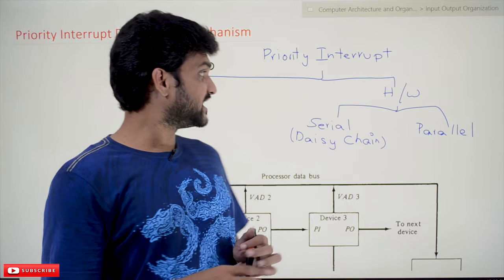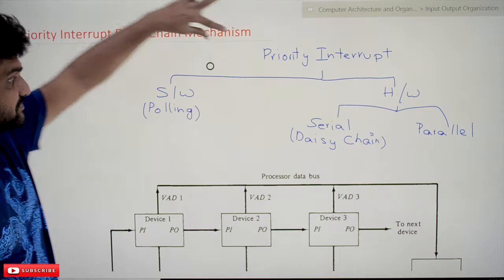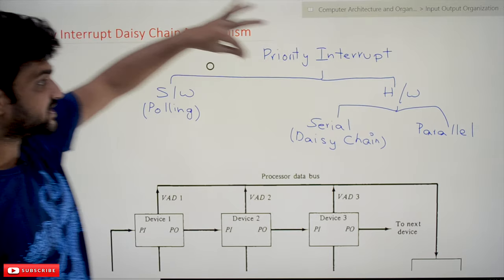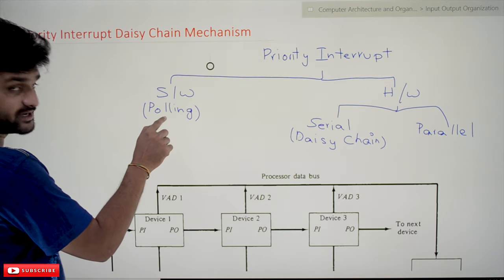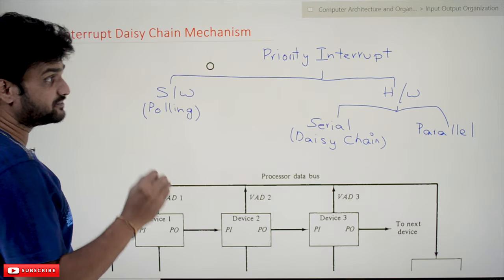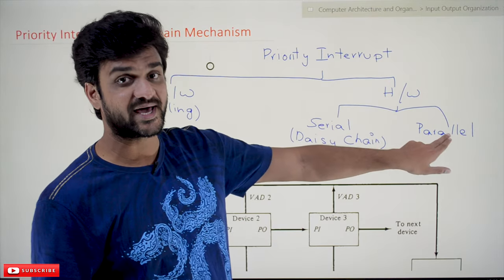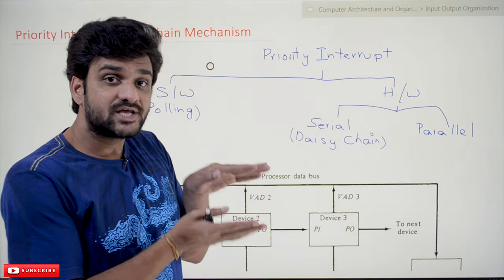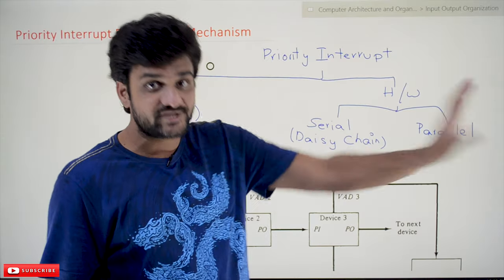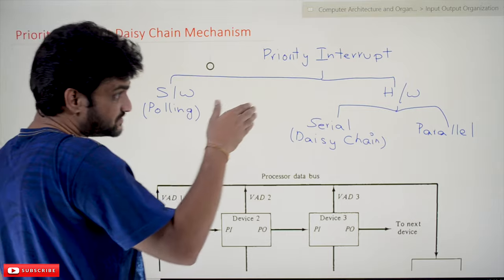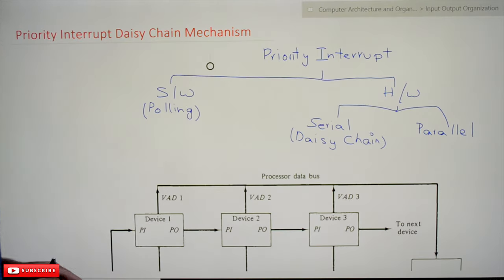In the previous class we discussed priority interrupts. Services for priority interrupts can be provided in two different ways: one is a software mechanism using polling, which is a software-implemented priority interrupt, and the other is hardware. Using hardware, there are two different ways — one is serial connection and the other is parallel connection. Serial connection means all input devices are connected serially to the CPU. The serial connection mechanism is what we call the Daisy Chain mechanism.